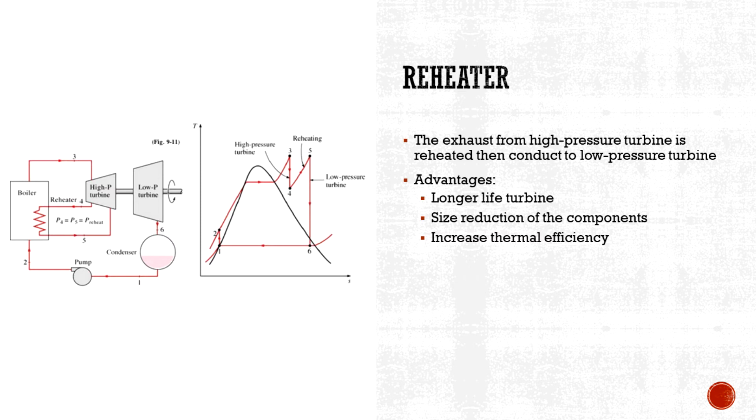Thus protecting the turbine from erosion by water droplets. The size of the turbine will be smaller because the range of pressure to be handled are smaller, affecting the other components in the plant to be smaller as well. Reheater might increase the thermal efficiency as well in certain conditions.